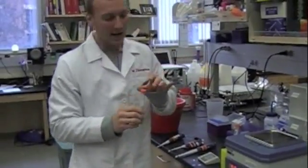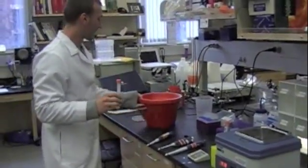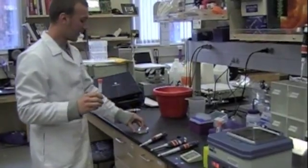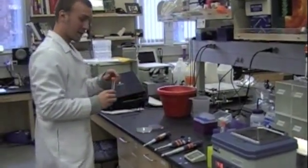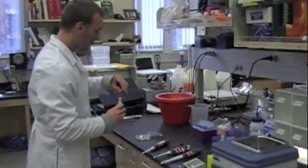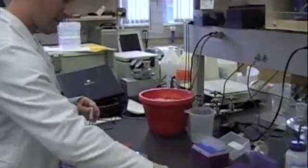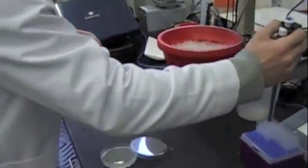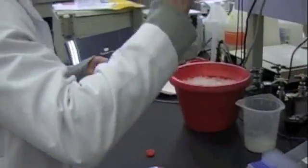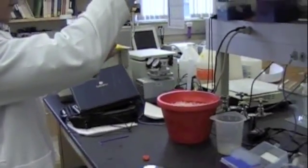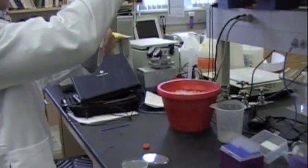we'll take this 50 ml falcon tube and continue to our final step of the transformation where we pipette this mixture onto our selective agar plate. We will take the whole 250 microliter sample and pipette this directly onto the agar plate.